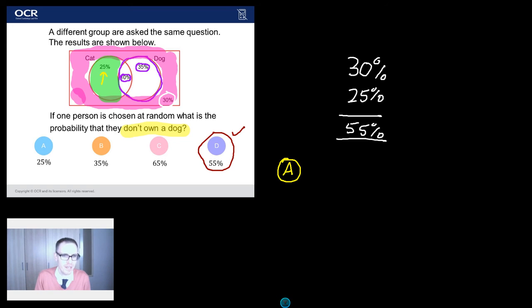Well, 25% is this number here, 25% is just the cat owners. And sure, they don't own a dog, that's fine. But students have forgotten about this other 30% who neither own a cat nor a dog. So be careful with that.